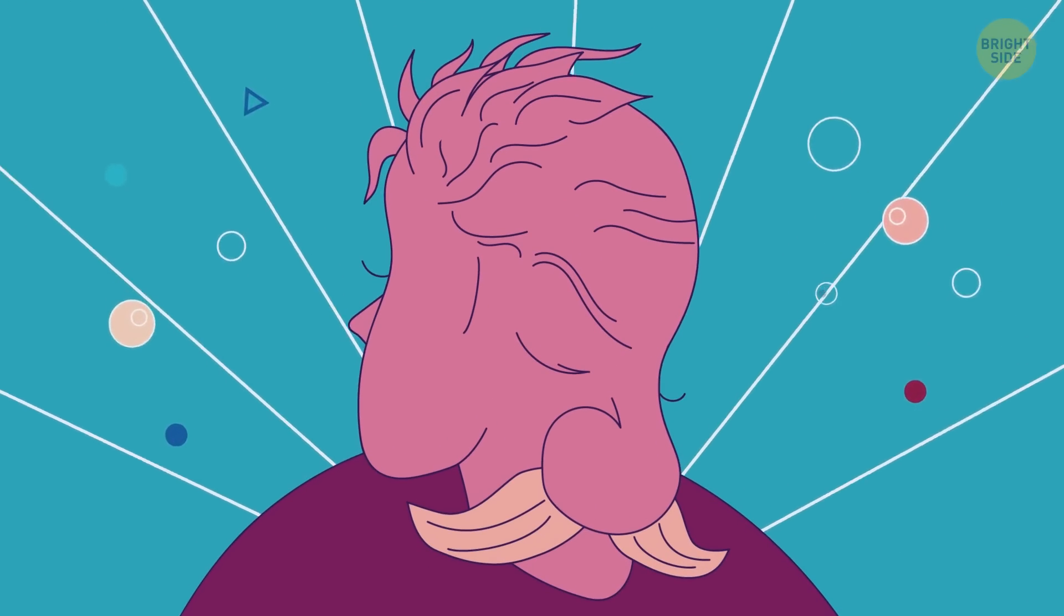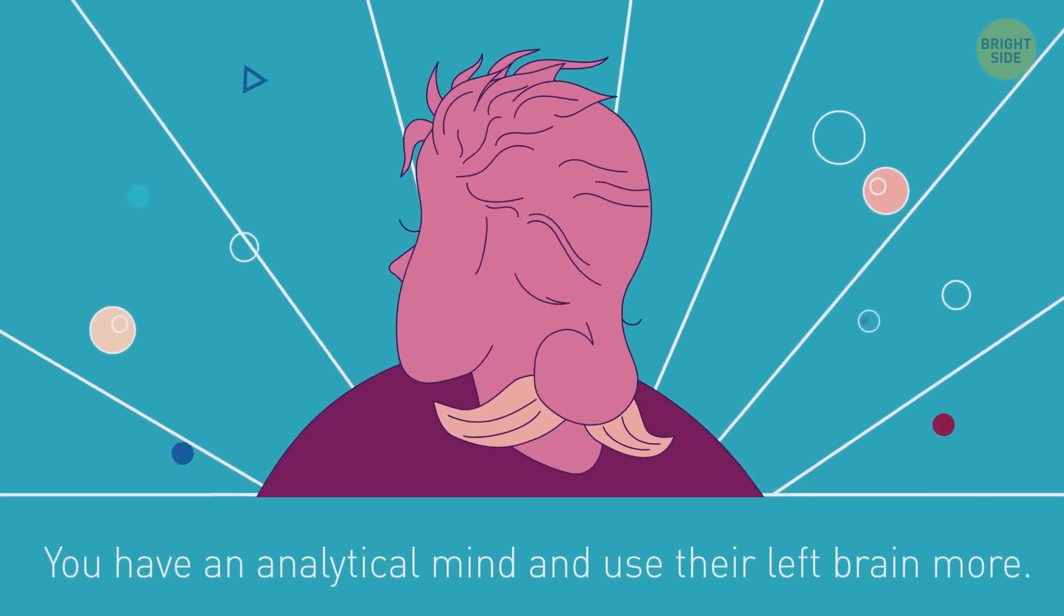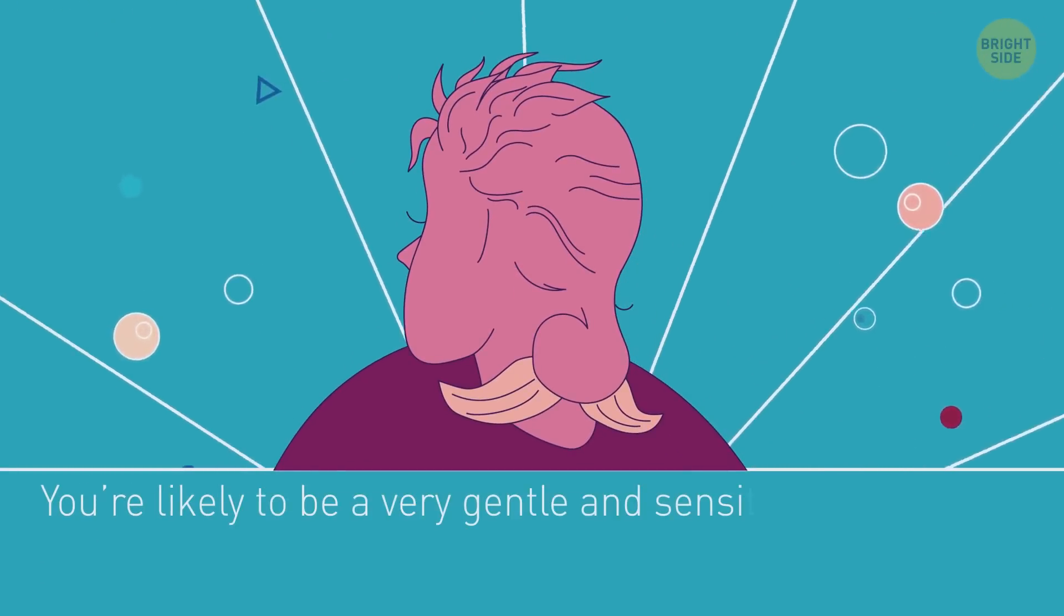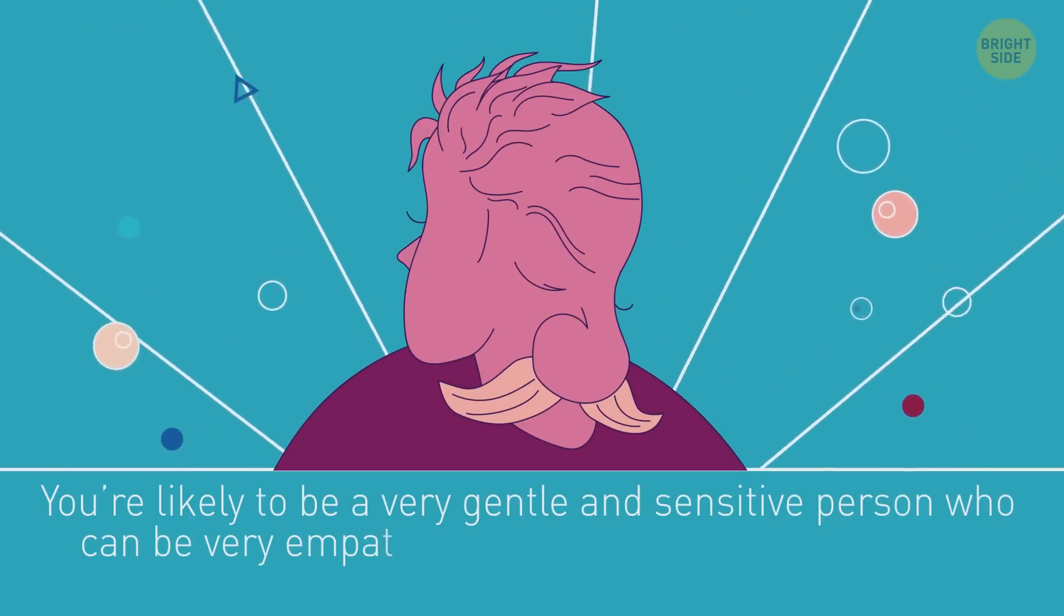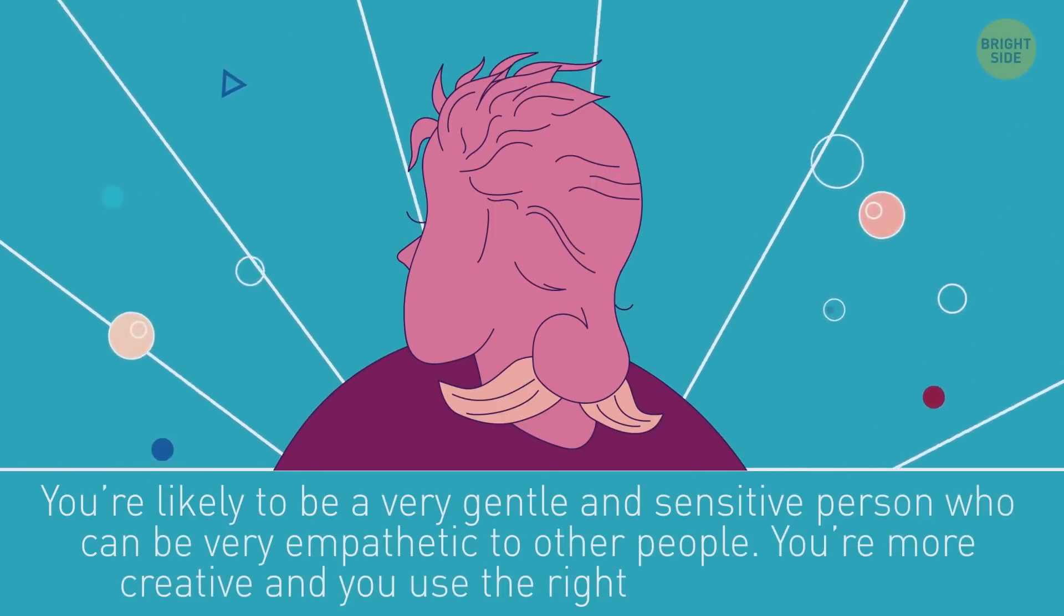Those who see a young woman here have an analytical mind and use their left brain more. If you see an old man, you're likely to be a very gentle and sensitive person who can be very empathetic to other people. You're more creative, and you use the right side of your brain.